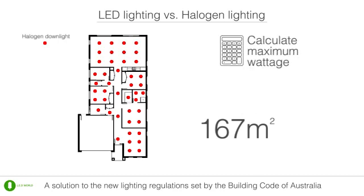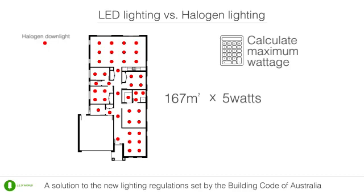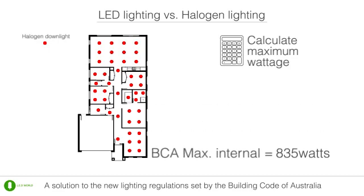Calculating the maximum acceptable wattage a house can have to comply with the new BCA regulations is easy. Simply take the area of the house in square metres and multiply it by 5 watts — 5 watts per square metre is the new energy limit. The example house plan pictured here has a maximum of 835 watts for the entire internal area. Now, multiply the total number of downlights in the house by 50 watts, as the standard halogen downlight uses 50 watts of energy. The example house is using 44 halogen downlights, therefore it has an internal usage of 2,200 watts.